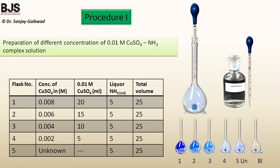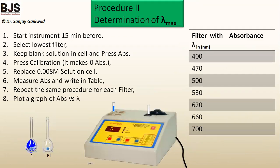The blank solution is prepared without any copper sulfate — 5 ml of liquid ammonia made up to 25 ml with distilled water. After preparation, all solutions are shaken well and kept ready for measurement. In the colorimeter, the available filters are at wavelengths: 400 nm, 470 nm, 500 nm, 530 nm, 620 nm, 660 nm, and 700 nm, and these are recorded in the observation table.